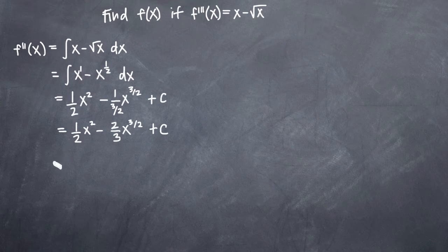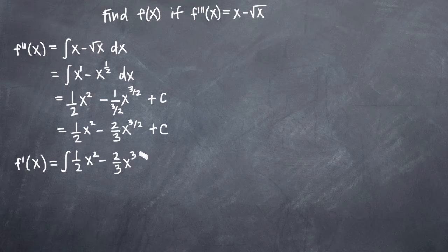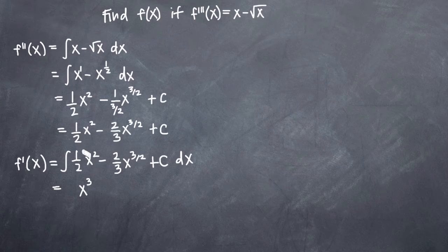Now we need to find the first derivative. The first derivative, f prime of x, will be equal to the integral of the second derivative: 1/2 x squared minus 2/3 x to the 3/2 plus c, dx. We'll use power rule again, term by term. We have x squared — add 1 to the exponent, 2 plus 1 gives us 3 — and divide the coefficient 1/2 by 3, giving us 1/6.